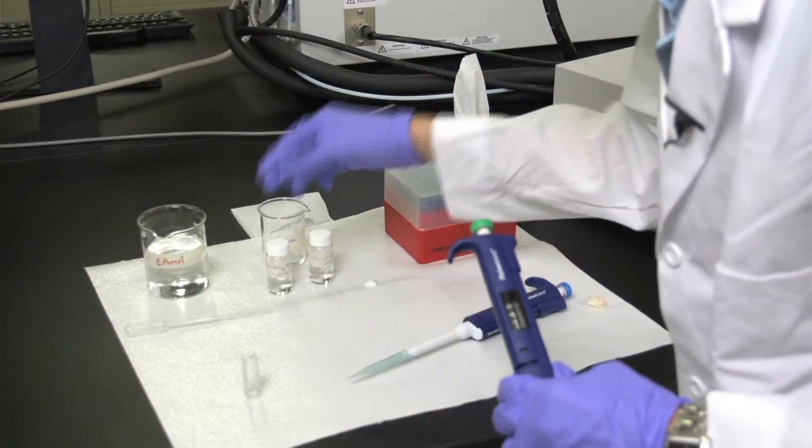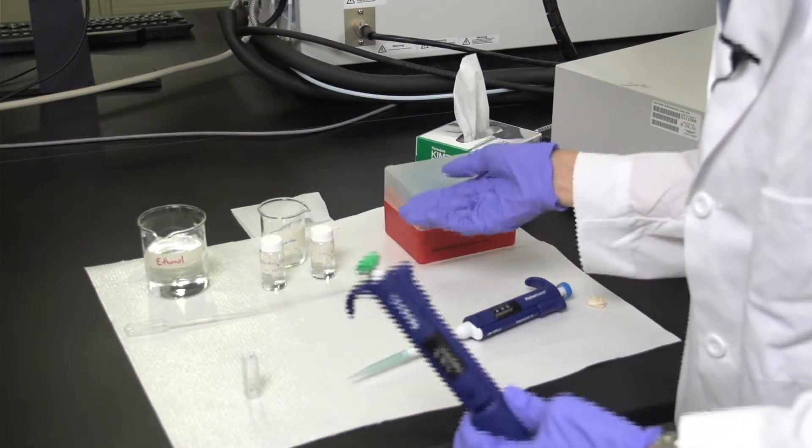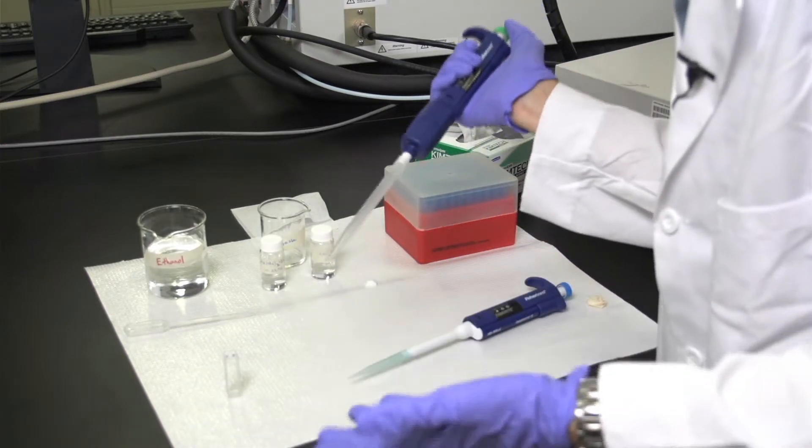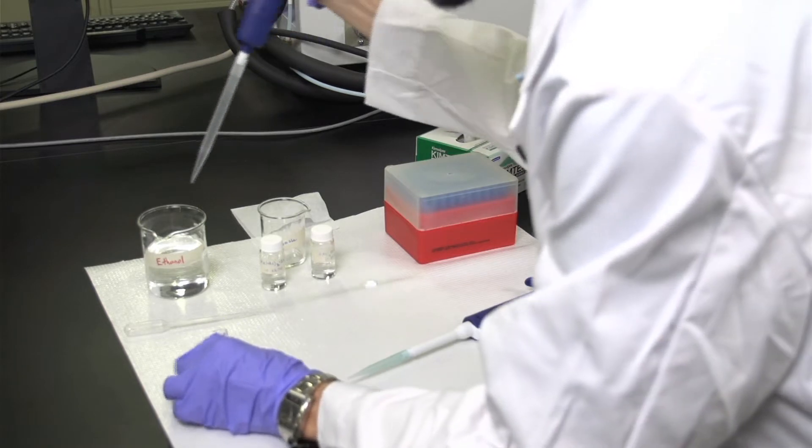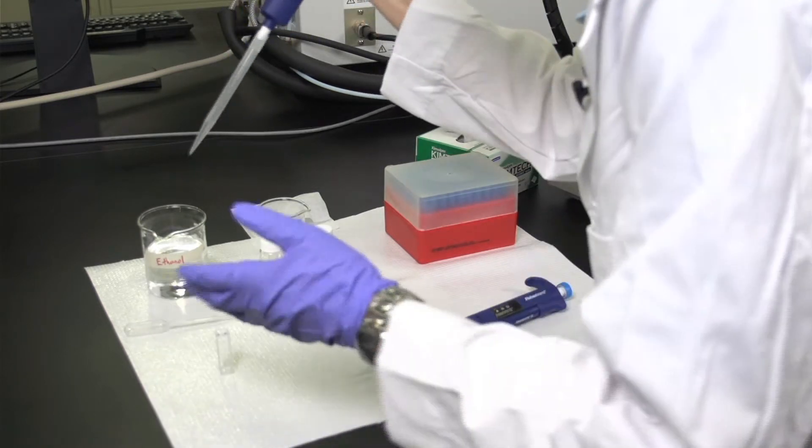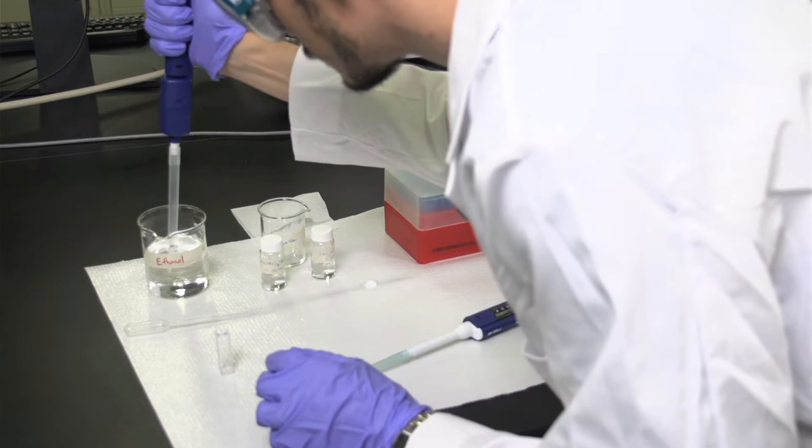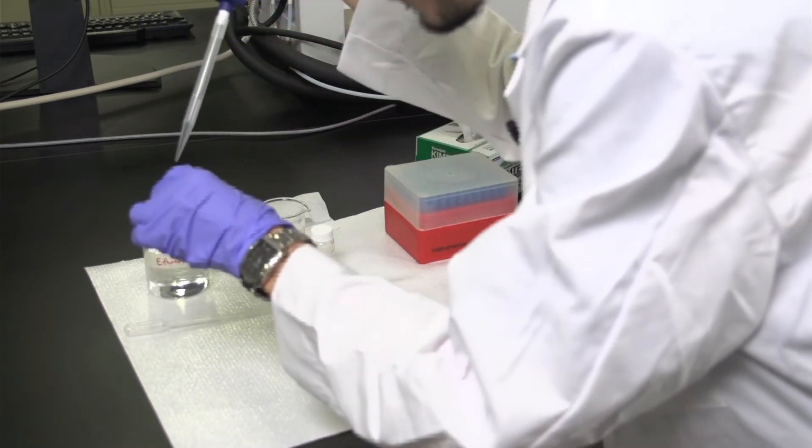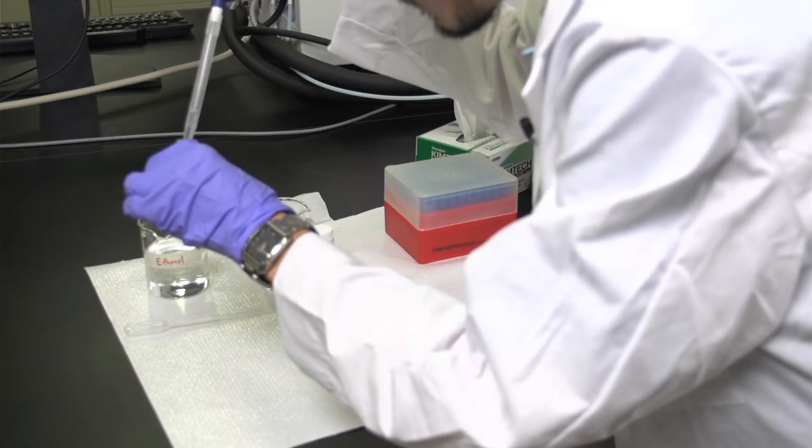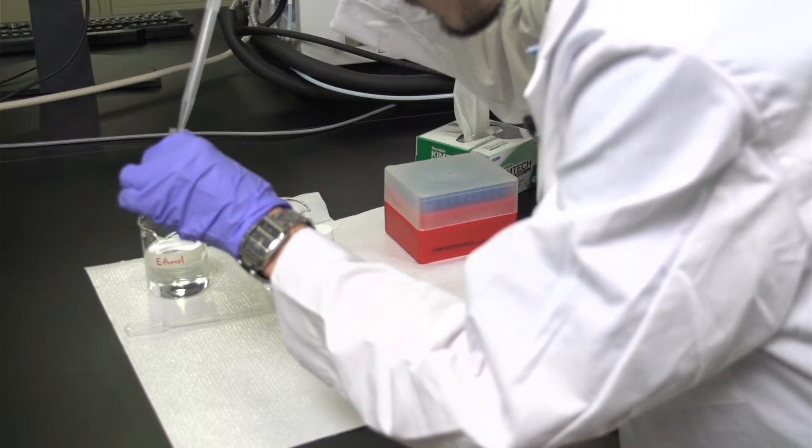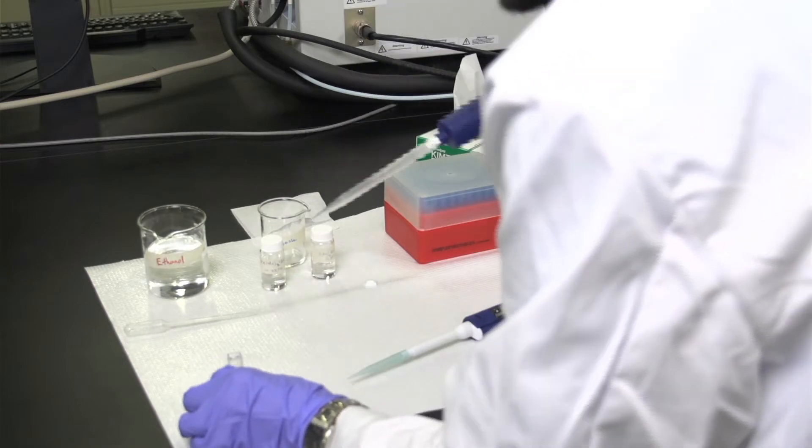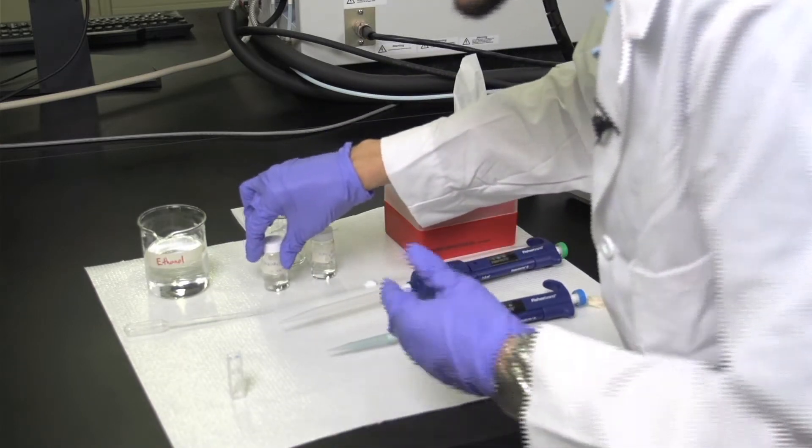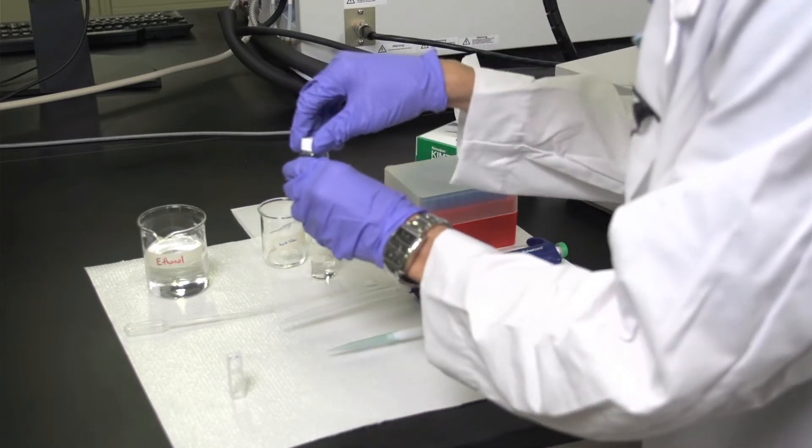Now that you've prepared your solutions of zinc acetate and tetramethyl ammonium hydroxide, it's time to make the quantum dots inside the quartz cuvette. First, use a micropipetor to add the ethanol, and then use the other micropipetor to add the zinc acetate.